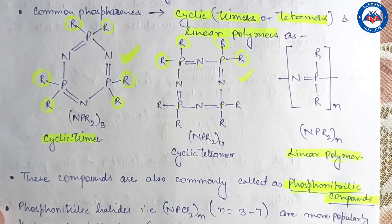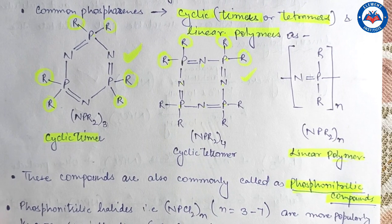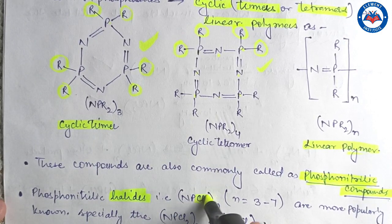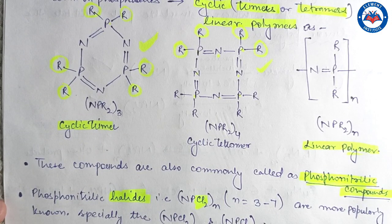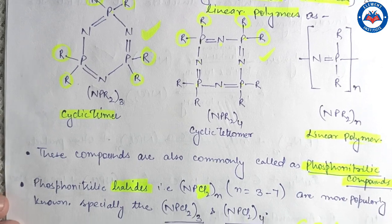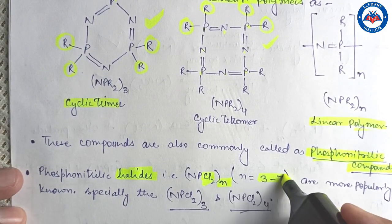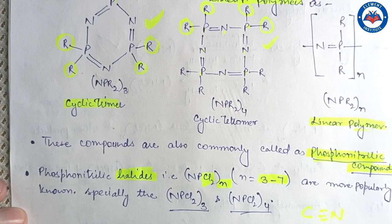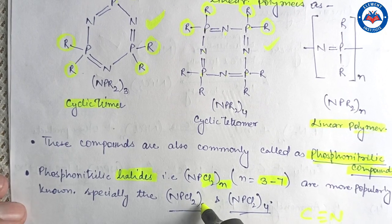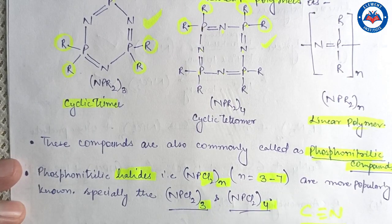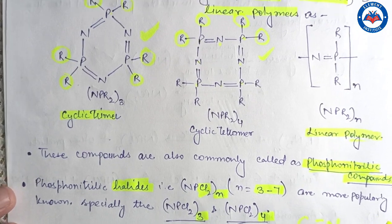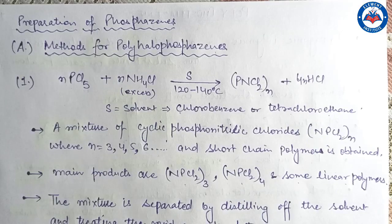These phosphazene polymers are commonly called phosphonitrilic compounds. Among the various phosphonitrilic compounds, the phosphonitrilic halides — especially the chlorides — are more popularly known. The value of n can range from 3 to 7, but the most widely studied phosphonitrilic halides have n equal to 3 and 4, meaning the cyclic trimers and tetramers are most studied.